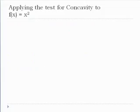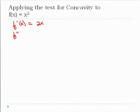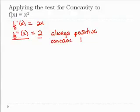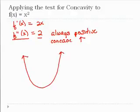Let's apply this test to the function f(x) = x². We find the second derivative. Our first derivative is 2x, and our second derivative is 2. It's always positive — I can't set it equal to zero, and it's never undefined. So that means the second derivative is always positive, which means it is concave up over the entire graph. If we're bending it out of wire, we would be bending it up over the whole thing. That's a very simple one.